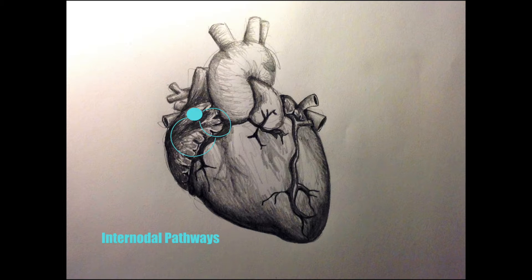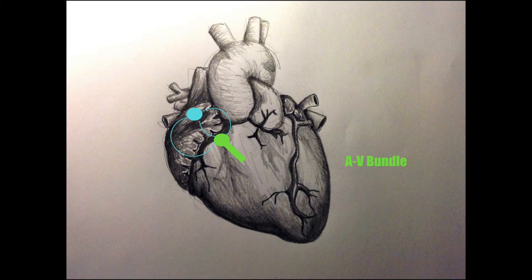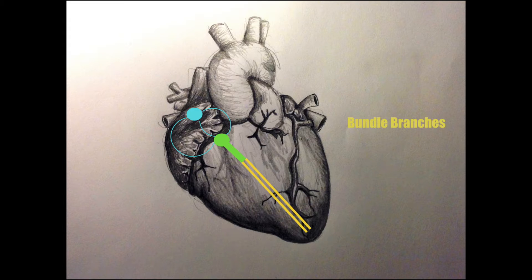The SA node sends electrical signals which travel to the atrioventricular node, or AV node. That signal is then sent down to the apex of the heart by way of the AV bundle and the bundle branches. The electrical signal then reaches the Purkinje fibers, which signal for the ventricles of the heart to contract.